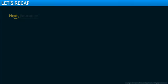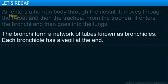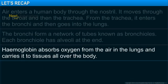In this module, you learned that air enters a human body through the nostril. It moves through the throat and then the trachea. From the trachea, it enters the bronchi and then goes into the lungs. The bronchi form a network of tubes known as bronchioles. Each bronchiole has alveoli at the end. Hemoglobin absorbs oxygen from the air in the lungs and carries it to tissues all over the body.